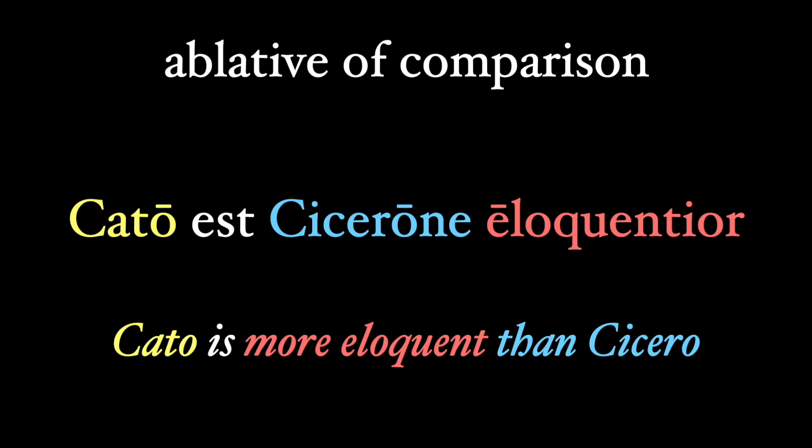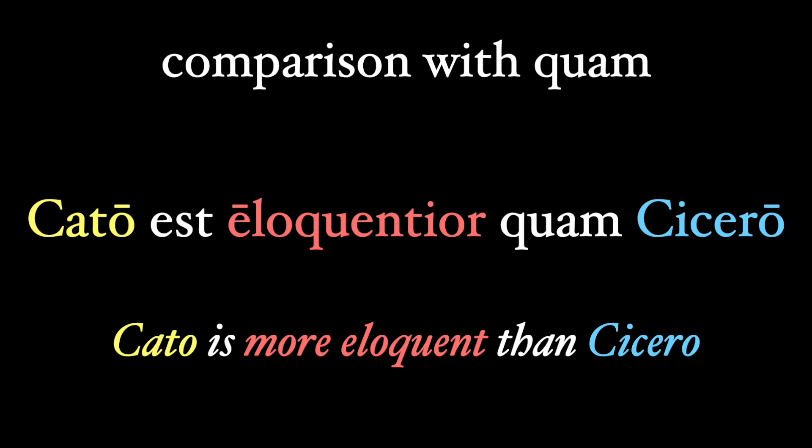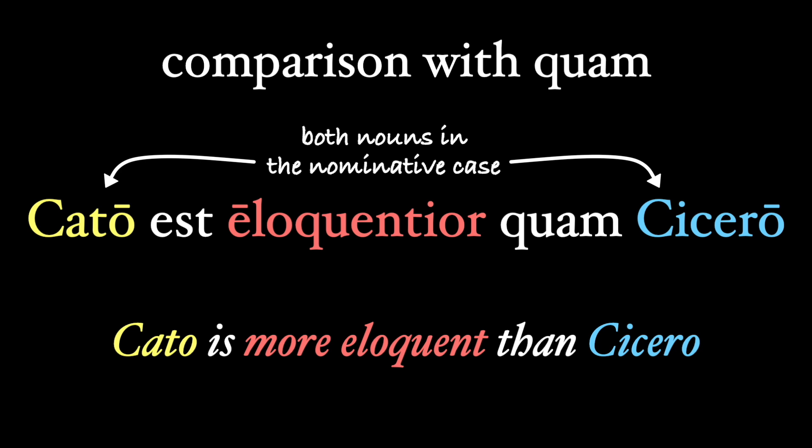Cato est Cicerone eloquentior — Cato is more eloquent than Cicero. But there's another way to show comparison, and that's with the word quam, which we would regularly translate as 'than.' We'll mark our two nouns with blue and yellow, and the comparative in salmon red. So let's take this phrase, remove the ablative, and show comparison with quam: Cato est eloquentior quam Cicero. Notice that Cato and Cicero, the two nouns being compared, are in the same case — the nominative. That's a requirement for using quam.